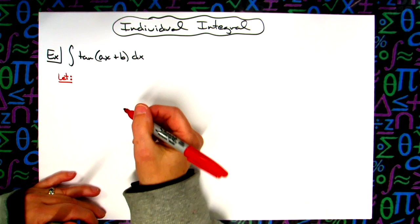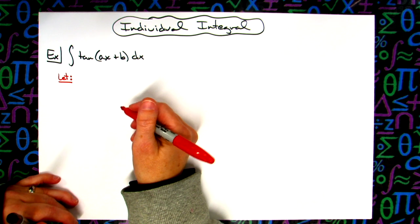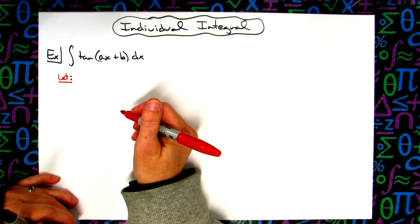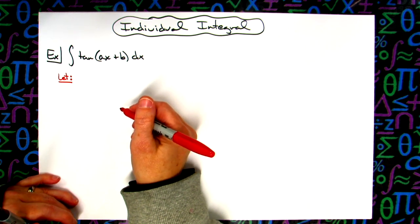In this video, we're going to take a look at an individual integral. It is going to be a basic u substitution integral. However, it's going to require two different substitutions.